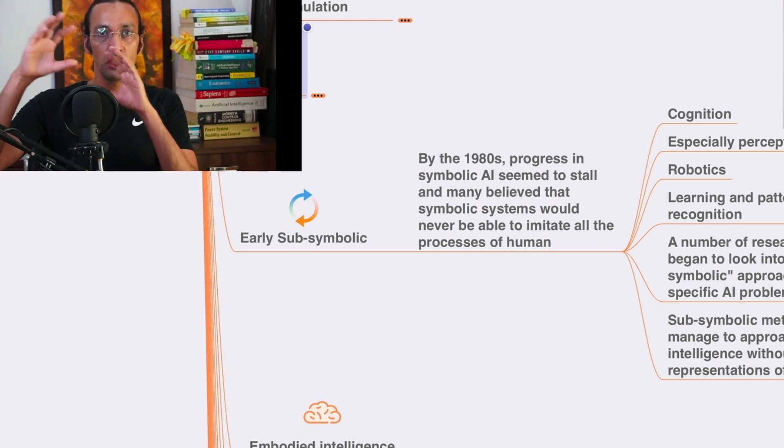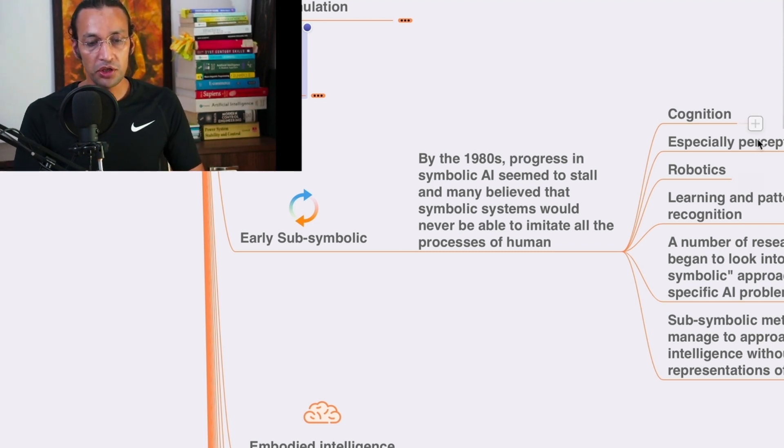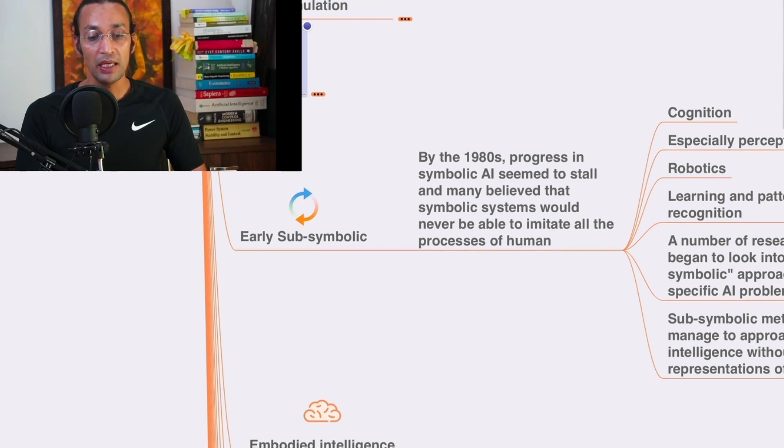So cognition, especially perception, robotics, learning and pattern recognition. A number of researchers began to look into sub-symbolic approaches to specific AI problems. Sub-symbolic methods managed to approach intelligence without specific representation of knowledge.